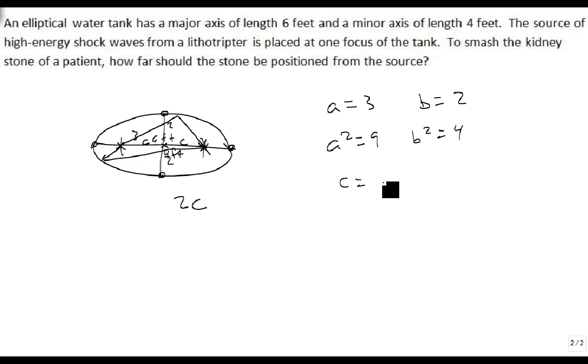c squared is equal to the bigger one minus the smaller one. So c squared is 9 minus 4, which is 5.